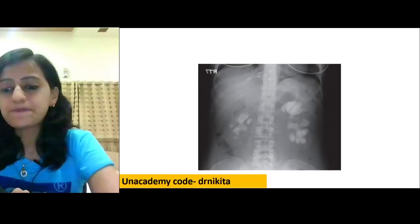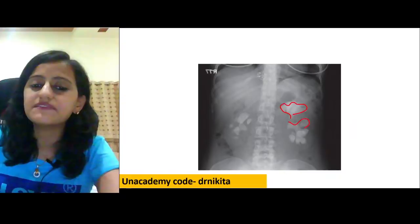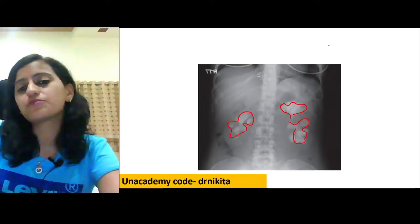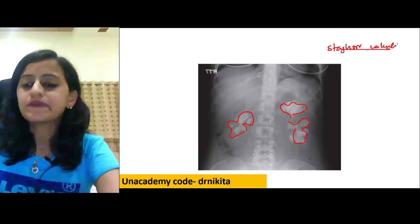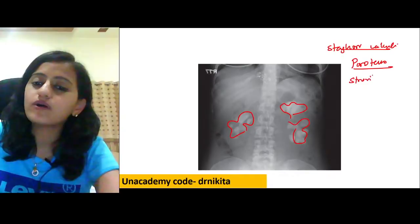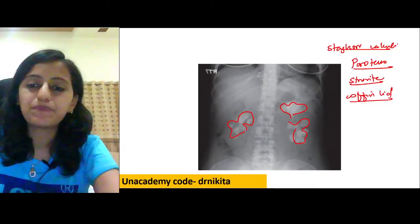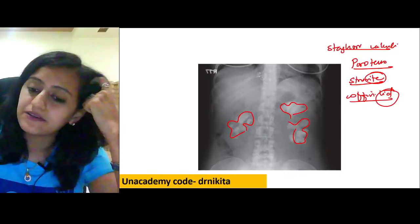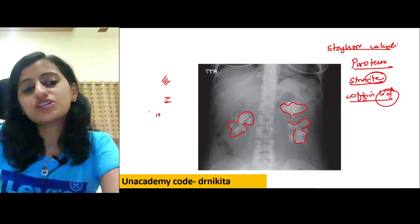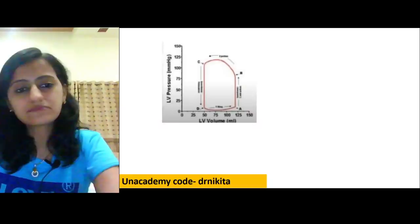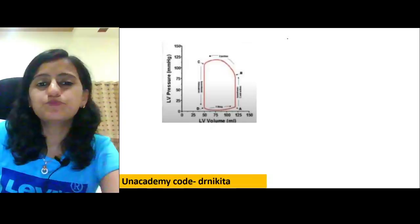Staghorn calculi on plain radiograph show calcified lesions occupying the pelvis. Predisposing infection is Proteus (urease-positive). Also called struvite stones; crystals have a coffin lid appearance. Medullary sponge kidney shows calcification only in the medullary part.